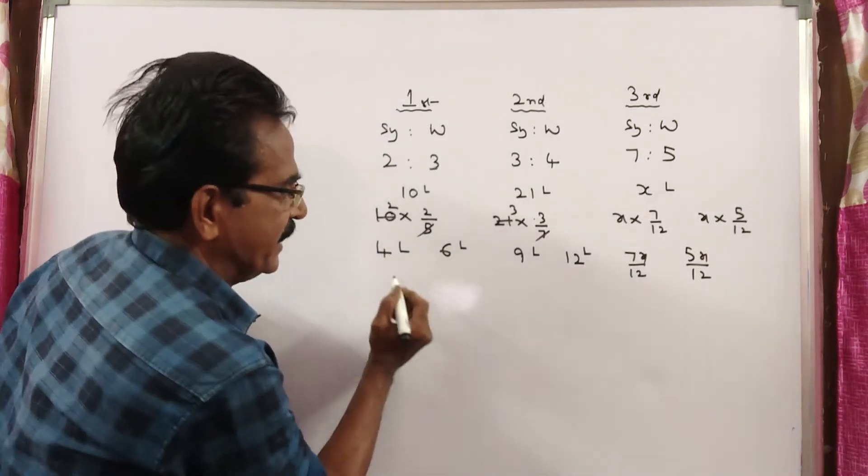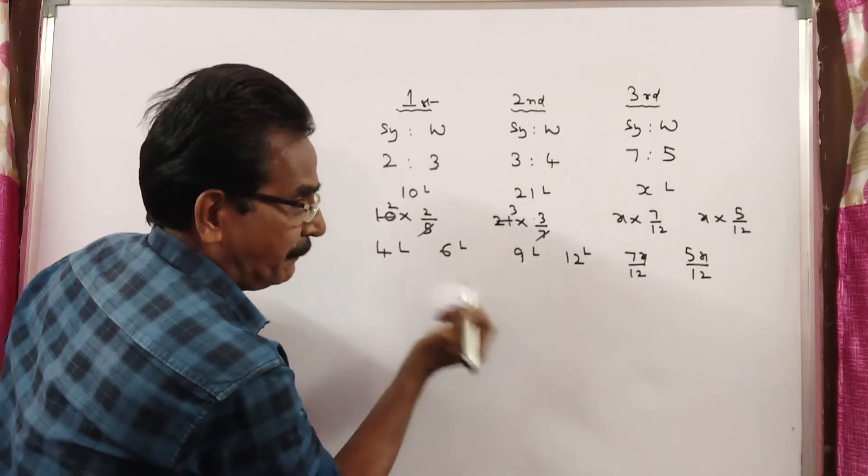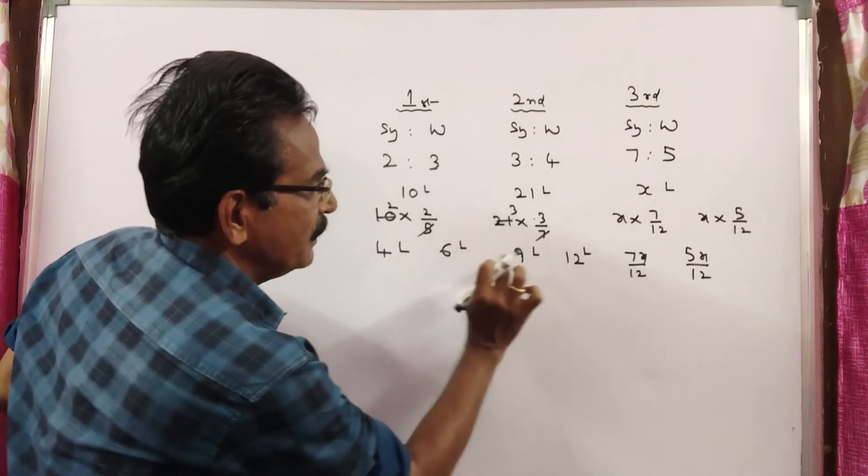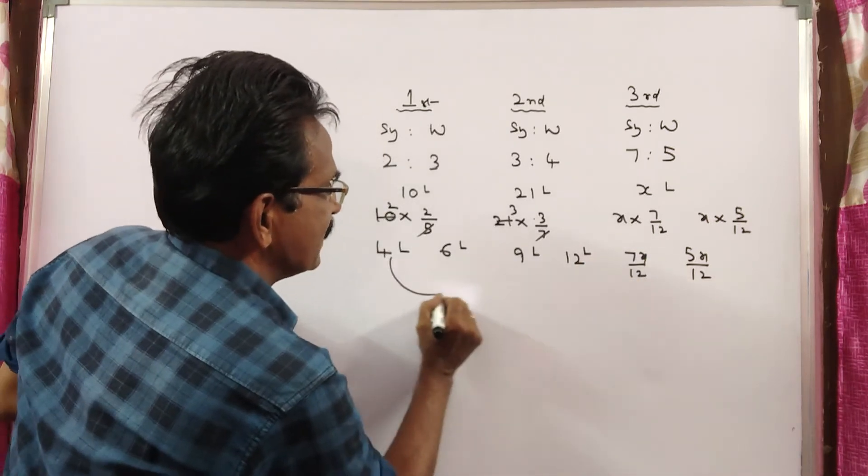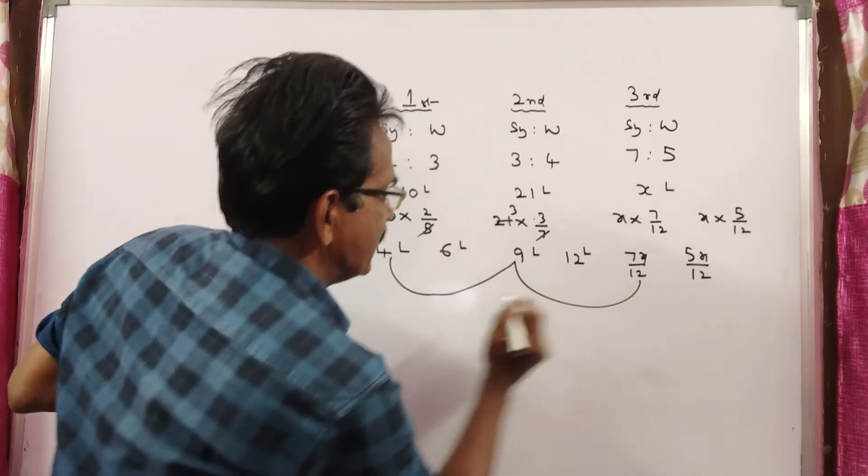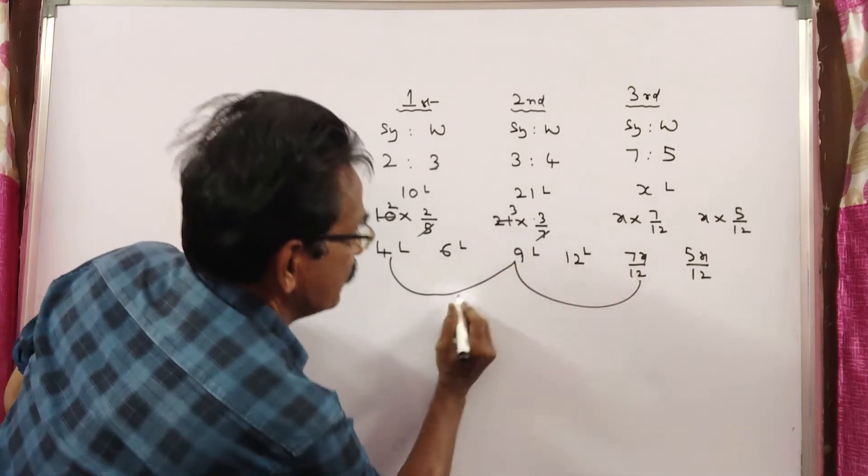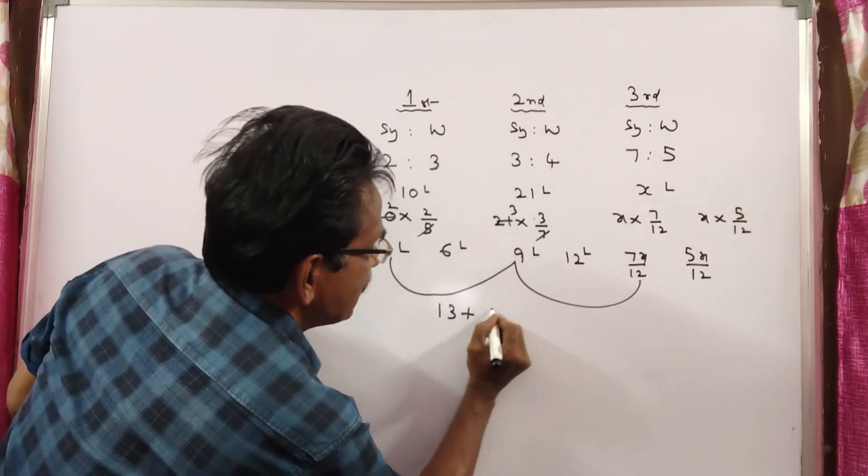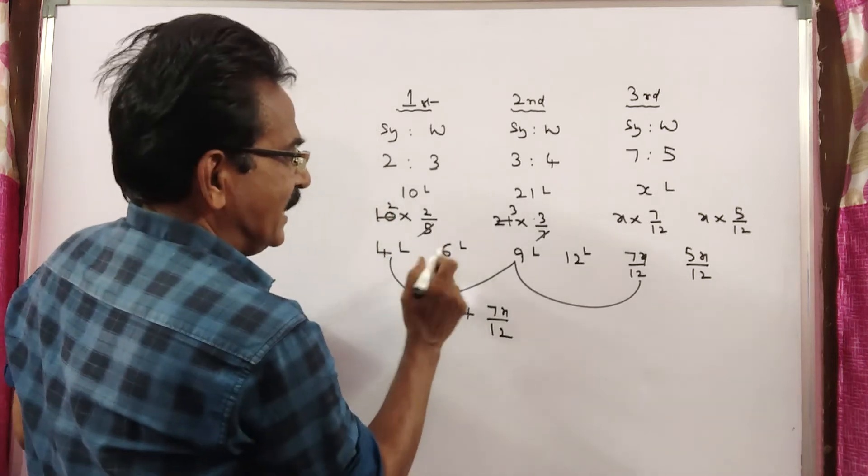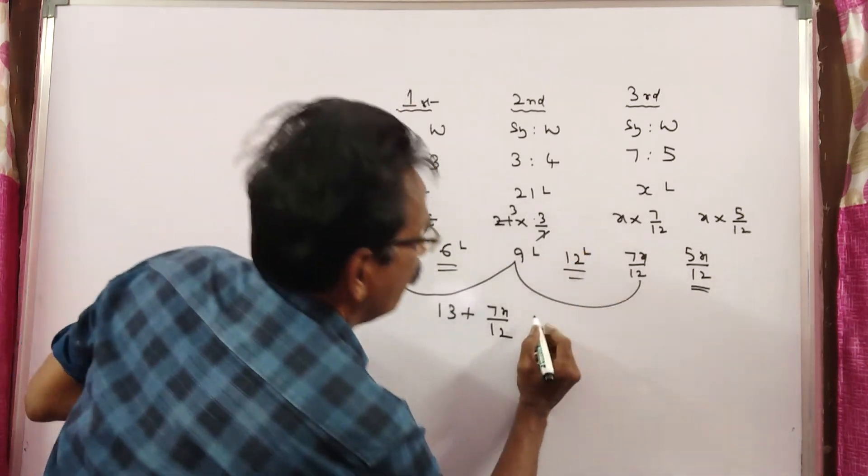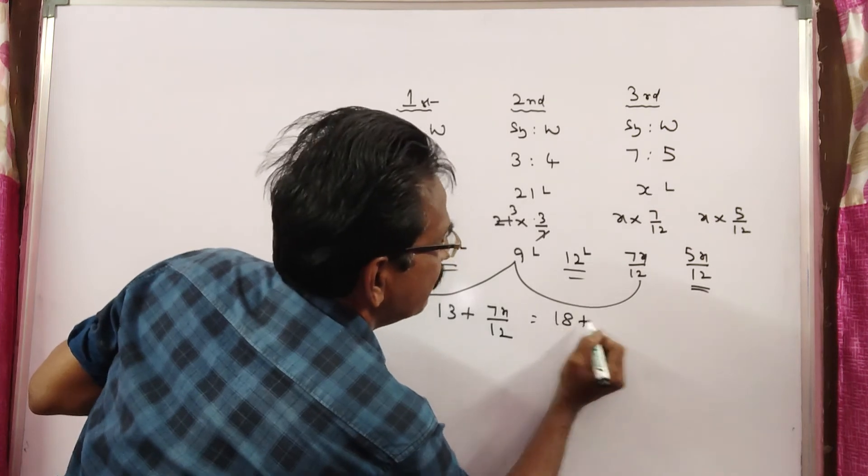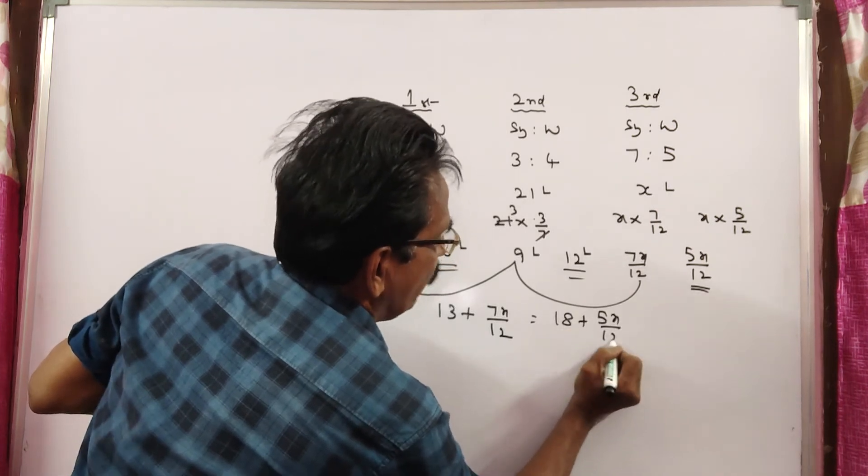So let us make syrup and water equal. 4 plus 9 plus 7x/12 - this is syrup. So 13 plus 7x/12. And this is water: 6 plus 12, which is 18 plus 5x/12.